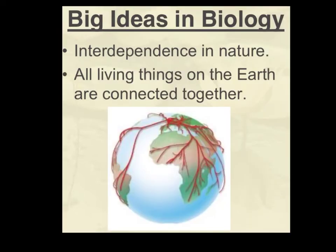The next idea is the concept of interdependence in nature. This is one of the first concepts we'll talk about because the entire first quarter is basically based around ecology, and this is a key ecological concept. It's the idea that all living things on the planet have an impact on one another. When we look at food webs and examine how energy flows through an ecosystem, you'll see this concept — if you remove enough of the tiny pieces that make up a food web, the food web itself collapses.